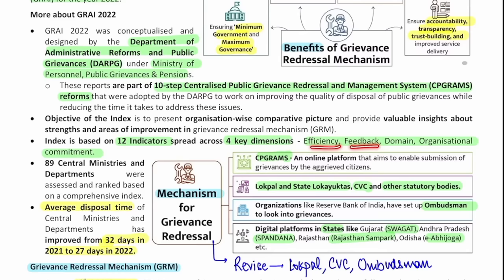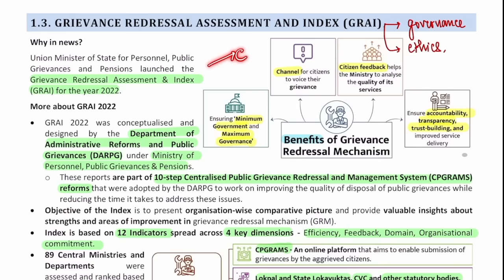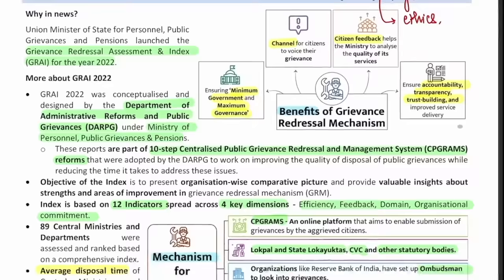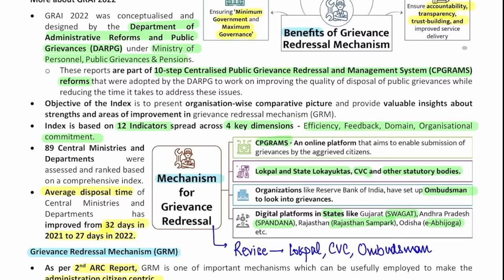Let's understand what happens here. If you take some service from the central or state government — for example, making a passport — and the service was not delivered well, it is the job of the government as a service provider to give you a forum where you can raise your grievances. In India, there are several mechanisms for this. One is CPGrams, which I will discuss. Then Lokpal, state Lokayukta, CVC and other statutory bodies — if you have a grievance of corruption, you can go to these bodies. The RBI and similar bodies have set up ombudsman to look into grievances, and there are digital platforms in various states like Swagat of Gujarat or Spandana of Andhra Pradesh.